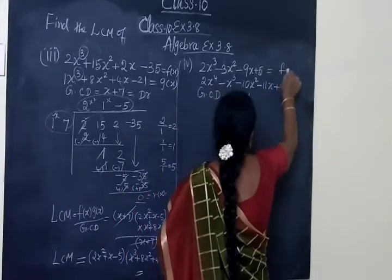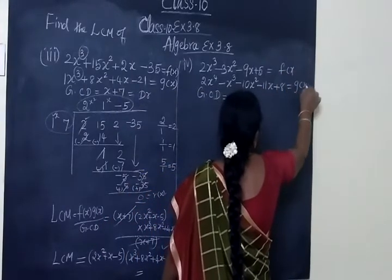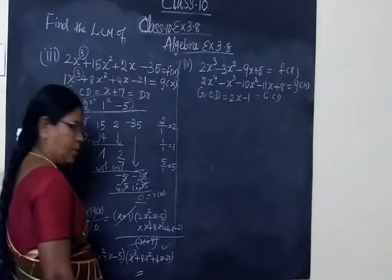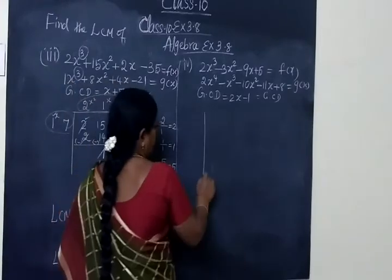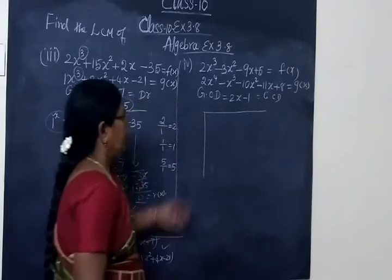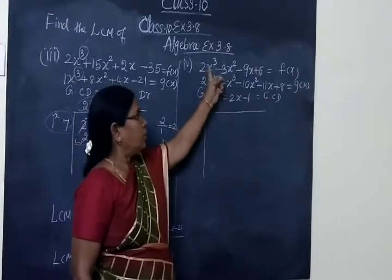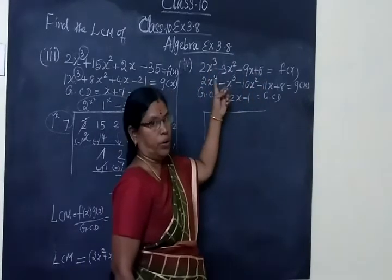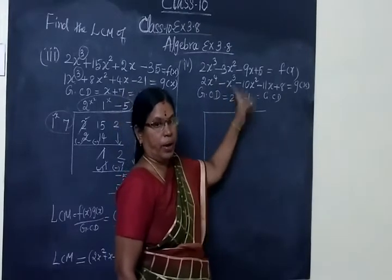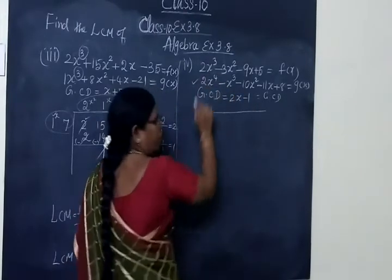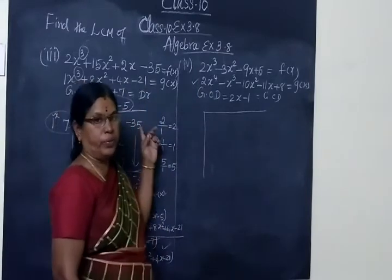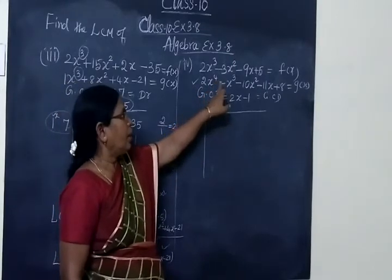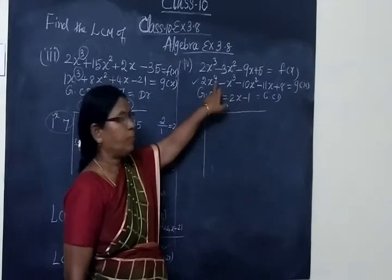Next, this is F of X and this is G of X, and GCD is given. Once again we are using the same relationship: LCM equals F of X times G of X divided by GCD. Now we have to divide. Looking at the degree: this will be degree 3, this will be degree 3, and this will be degree 4.